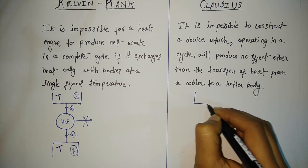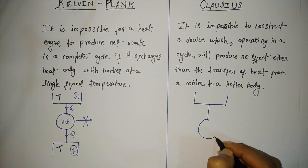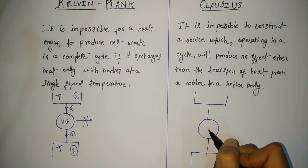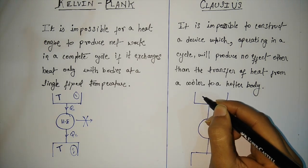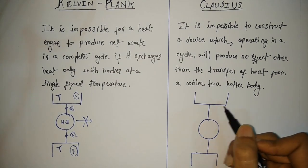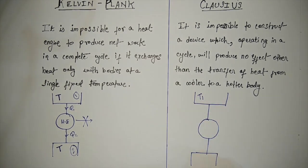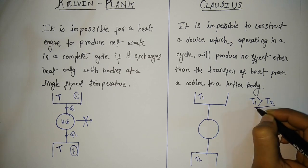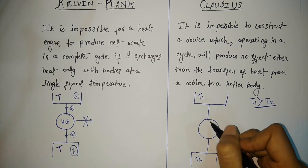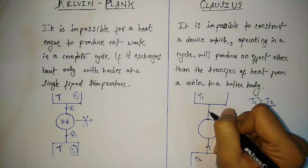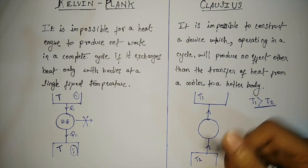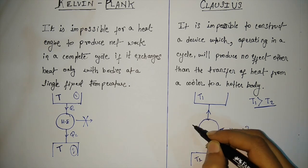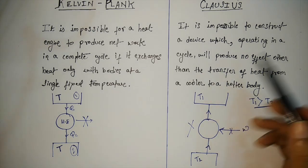As before, if we draw the schematic diagram — consider this temperature to be T1 and this to be T2, and if T1 is greater than T2 — then by the concepts previously discussed, heat transfer from T2 to T1, that is the refrigeration effect, cannot take place without an input of external work. If this work is not provided, then this process will not be feasible at all. This is what Clausius's statement is all about.